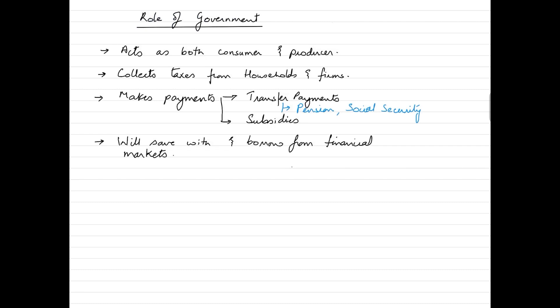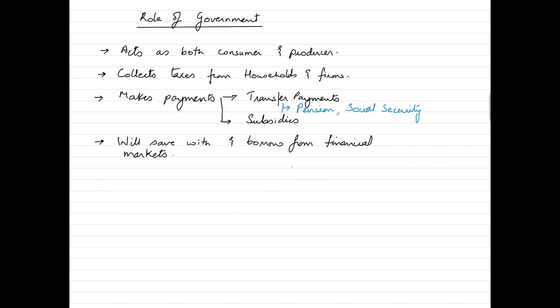In the three-sector model, the third sector introduced is the government sector. The government provides public goods and services such as national defense, education, and infrastructure. Its first role is to act as both a producer and a consumer of services — for example, it hires factors of production from households and purchases goods produced by firms.